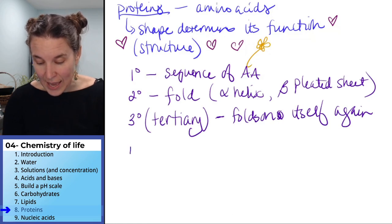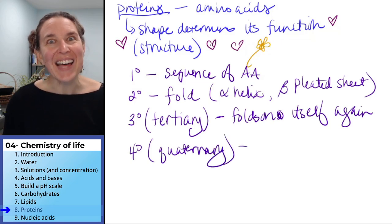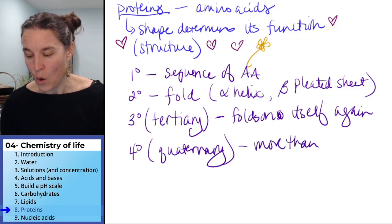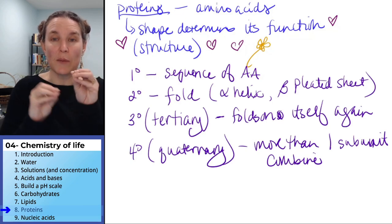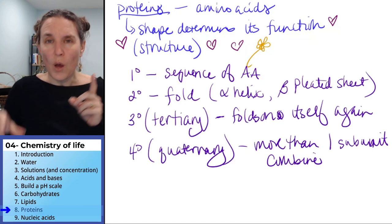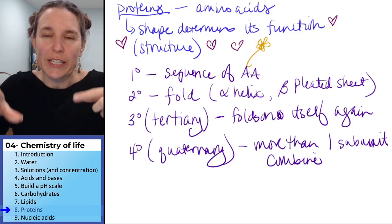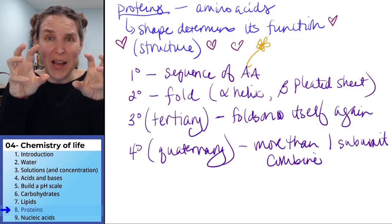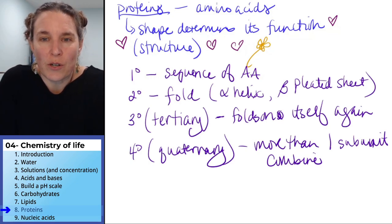And there is a quaternary structure. And that's when more than one protein subunit combine. So you can end up with, and this is hemoglobin has multiple subunits. And that's a protein that carries oxygen in your blood cells, red blood cells. When those different subunits, those different tertiary folded strings of amino acids combine together and have a new structure, that's quaternary structure of the proteins.